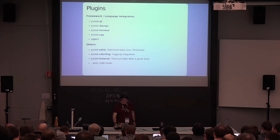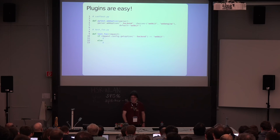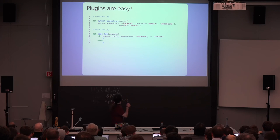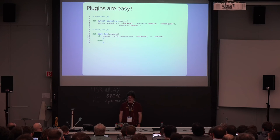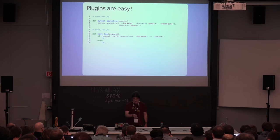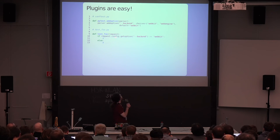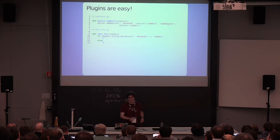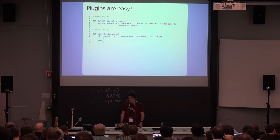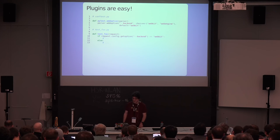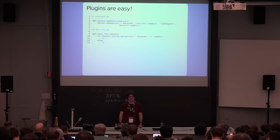If there isn't a plugin for something you want, it's really easy to write one. In this example, we implement the pytest_addoption hook — PyTest will call this when setting up things, and you can add a command line option, in this case 'backend'. Then in a test you can use the built-in fixture called 'request', which holds information about the test that requests it, and get the argument to see what it was set to. There are dozens of these hooks and it's really easy to use them.